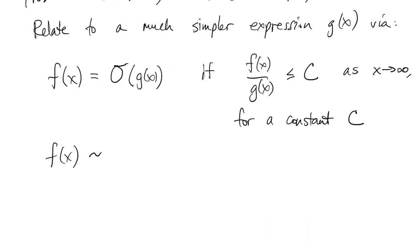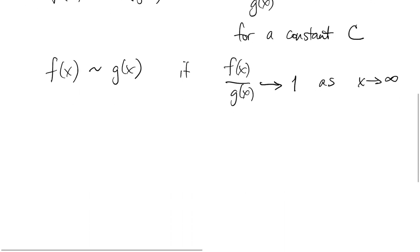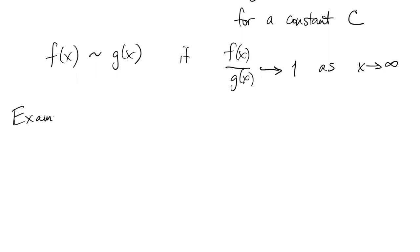The other notation is a bit more precise. We say that f is asymptotic to g, using a tilde, if this ratio actually approaches 1 as x goes to infinity. For example, if you have a polynomial like 2x^4 + 3x + 7, well, that's O of the highest degree term. And it's asymptotic to that term with the coefficient attached.